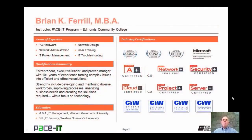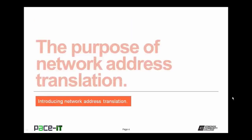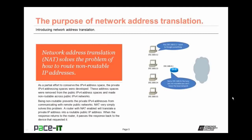Hello, I'm Brian Farrell, and welcome to Pace IT session on Introducing Network Address Translation. Today we're going to be talking about the purpose of Network Address Translation, and then we're going to discuss how Network Address Translation works. Network Address Translation, or NAT, solves a very serious problem of how to route non-routable IP addresses. As a partial effort to conserve the IPv4 address space, private IPv4 addressing spaces were developed. These address spaces were removed from the public IPv4 address space and made non-routable across public IPv4 networks.